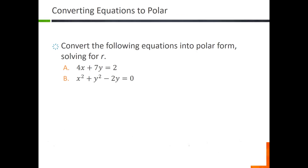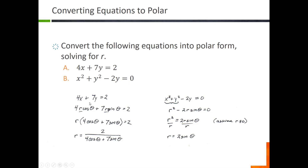For converting equations from rectangular to polar: if we have four x plus seven y equals two, replace x and y with r cosine theta and r sine theta, factor out r, and divide both sides by what's left in the parentheses. That gives r equals two over the quantity four cosine theta plus seven sine theta. For x squared plus y squared minus two y equals zero, remember x squared plus y squared equals r squared and y equals r sine theta. Substituting, moving terms and dividing both sides by r, we get r equals two sine theta.